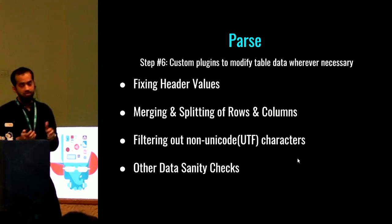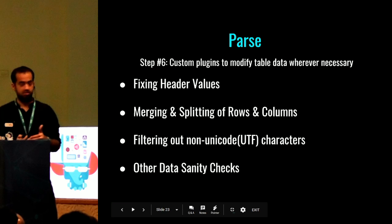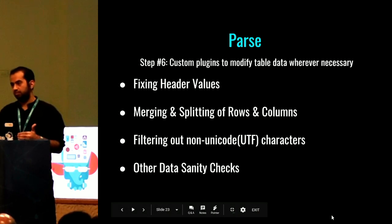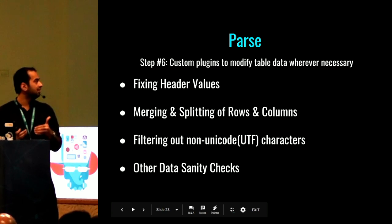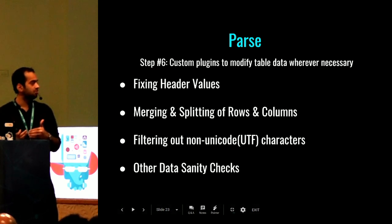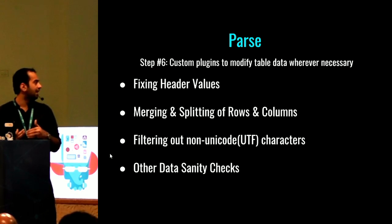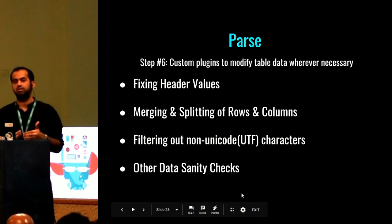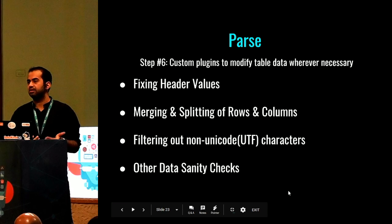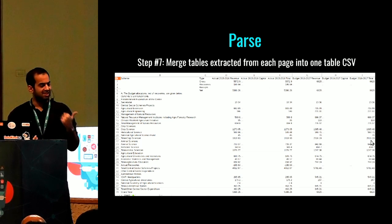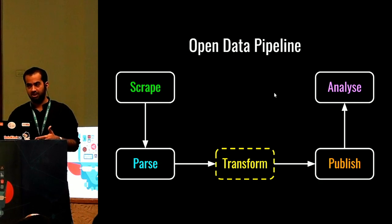Apart from common munging, we require some specific munging which happens in the plugin — like fixing header values, since headers are sometimes inconsistent. Sometimes rows and columns are merged or split for print layout, so we split or merge them based on the logic to make it more machine readable. We also filter out non-UTF characters, because when pushing through an API they become a problem. We do other data sanity checks to make sure PDFs are converted well into CSVs — like checking totals and cross-net calculations. Finally, we get something much easier to consume.